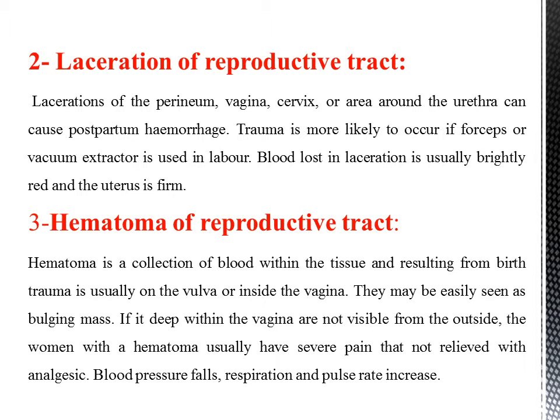Laceration of the reproductive tract: Laceration of the perineum, vagina, cervix, or area around the urethra can cause postpartum hemorrhage. Trauma is more likely to occur if forceps or vacuum is used in labor. Blood loss from laceration is usually bright red in color and the uterus is firm.